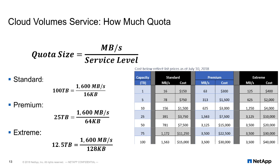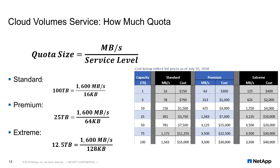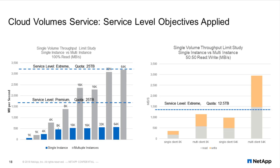Now that we've converted I/O to megabytes per second, we can figure out how much quota we need. The formula is: quota size equals megabytes per second divided by service level. Standard is 16K, Premium is 64K, and Extreme is 128K per gigabyte. If we need 1,600 megabytes per second at Premium level, 25 terabytes of quota is needed. At 8K random read, that's just about the amount of work a single volume can do.